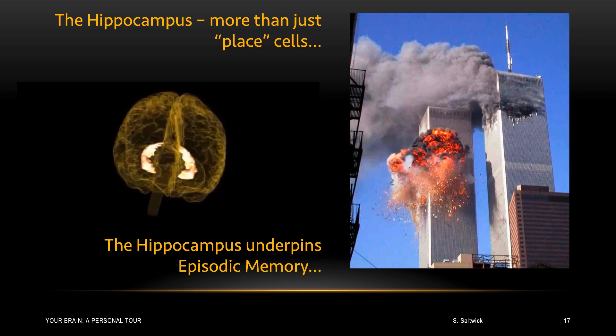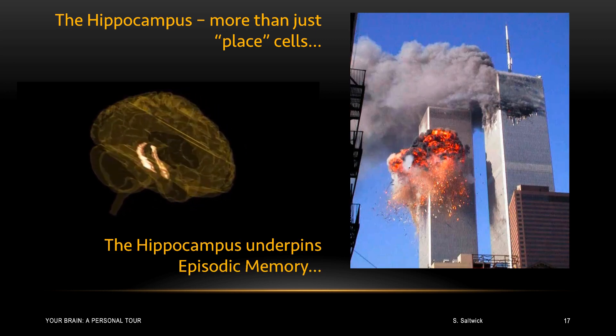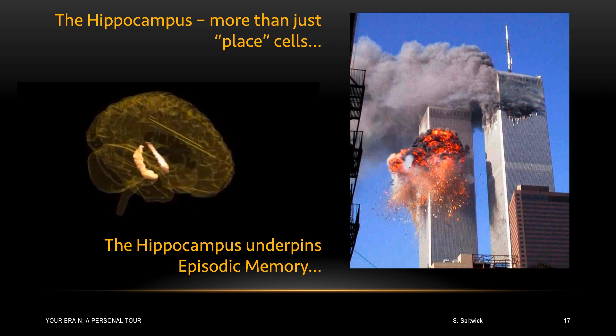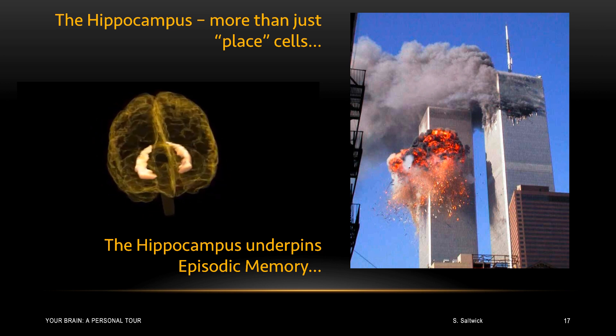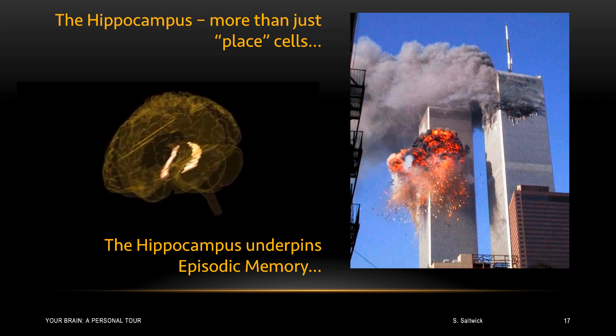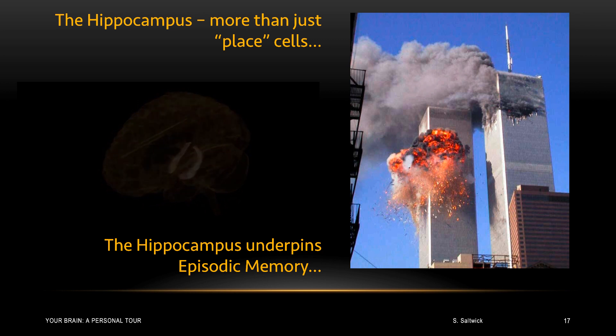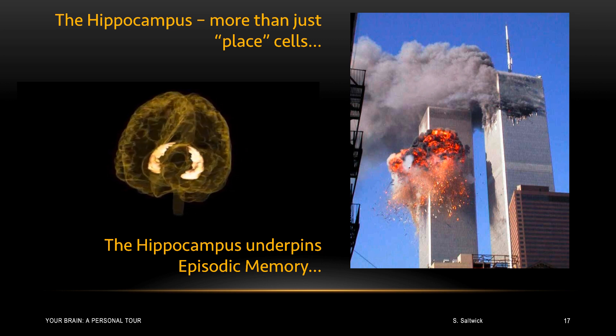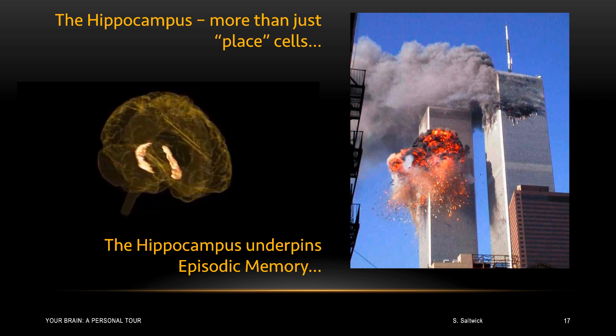Examples of episodic memory are, do you remember where you were and what you were doing at the time of 9-11? Where you were and who you were with when you heard of the assassination of John F. Kennedy? Or when Neil Armstrong stepped on the moon? These are autobiographical memories, almost like a Proust story, and they are rich. They are detailed. We remember them vividly. It turns out the hippocampus is essential for this kind of memory.